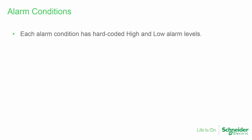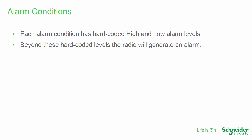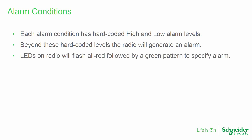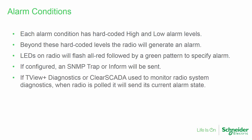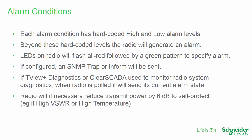Each alarm condition has hard-coded high and low alarm levels. Beyond these levels, the radio will generate an alarm. At this point, the LEDs on the radio will flash all red, followed by a green pattern which specifies the alarm. If SNMP is used, a trap or inform will be sent. If TVU diagnostics or clear SCADA is used, when the radio is polled, it will send its current alarm state. Note that a TRIO-Q radio will, if necessary, self-protect by reducing its transmit power by 6 dB, for example if a high VSWR or high temperature condition is detected.